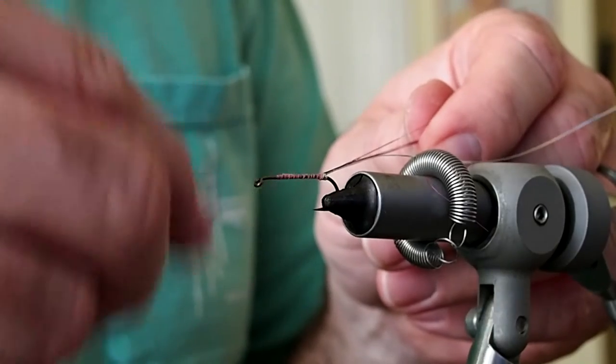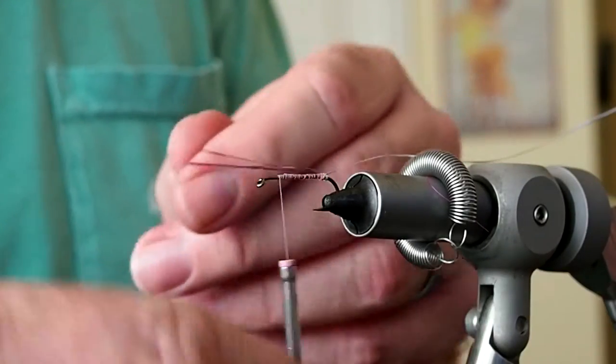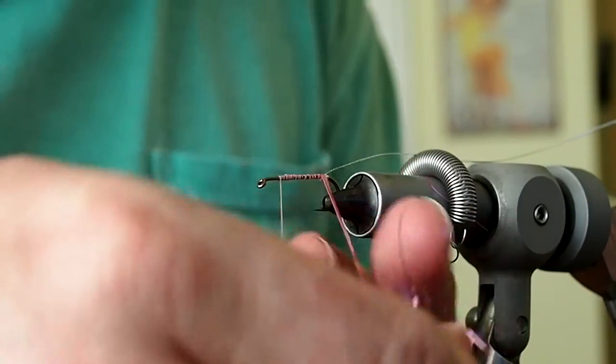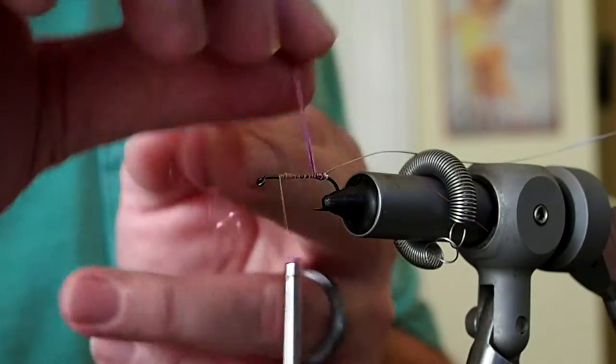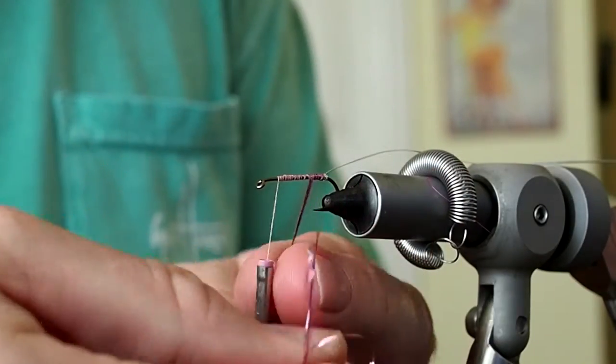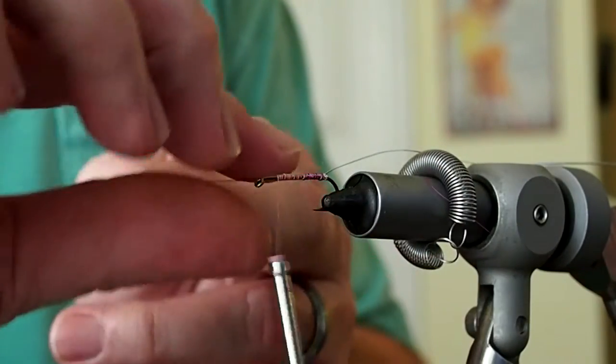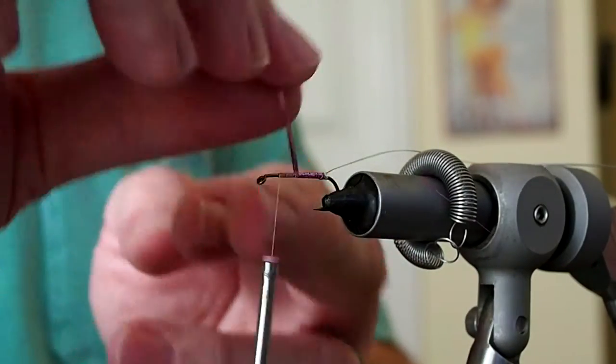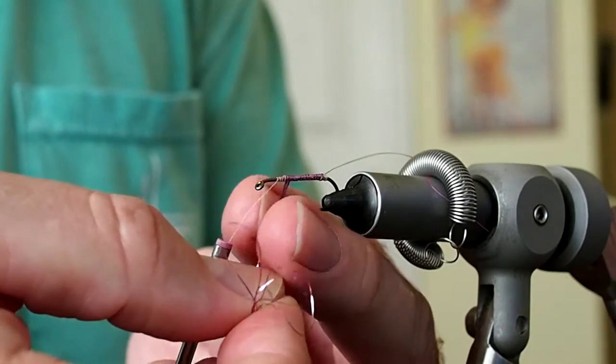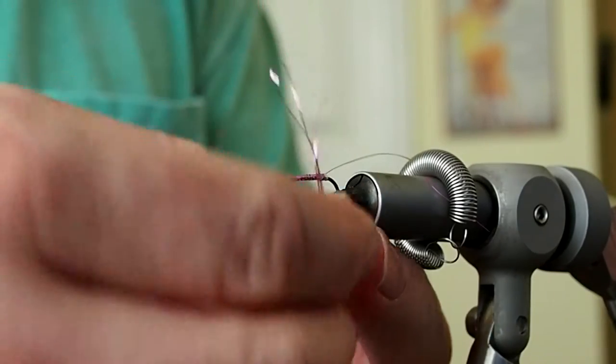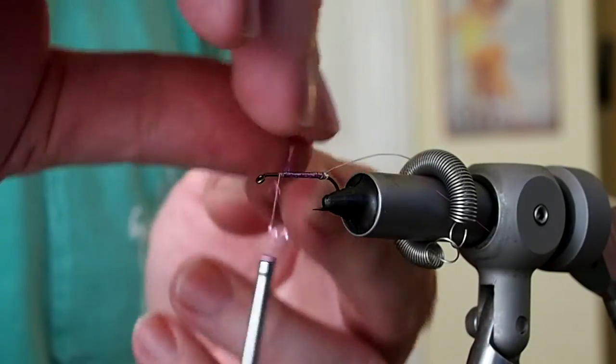And we'll just advance our thread back up to the tie-in point. And then just start wrapping our body with the tinsel. It should be enough to bring it back down.